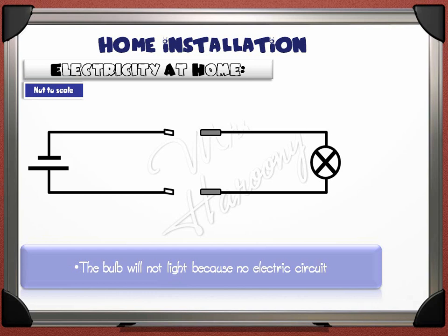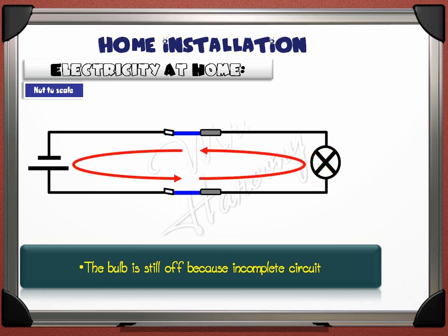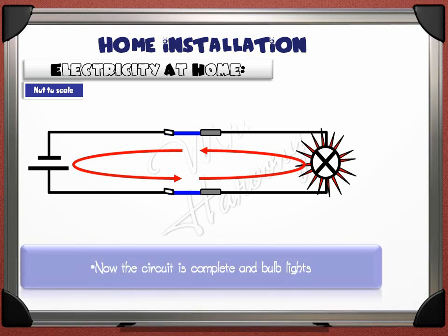The bulb will not light because there is no complete electric circuit. If we make only one connection as shown, the bulb is still off because of the incomplete circuit. But if we connect both connections, the bulb will light because current will flow since the circuit is now closed.